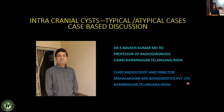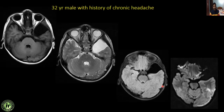Good evening all. I will be discussing intracranial cysts — both typical and atypical cases. Coming to the history: a 32-year male with history of chronic headache. You can see there is a cystic lesion in the left temporal lobe which is hyperintense on T1, hyperintense on T2, completely suppressed on FLAIR, and there is no restricted diffusion on DWI. This is a classical case of arachnoid cyst.